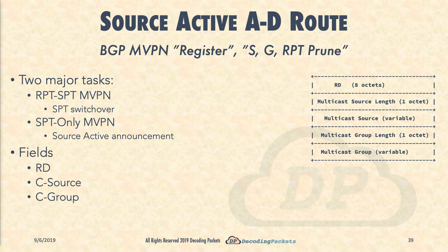I am referring to the two major philosophies on how to support ASM, or any source multicast, in the customer network via an SP MVPN. As a first option, we can have what are called RPT-SPT MVPNs — MVPNs that support both RPTs (rendezvous point trees) and SPTs (shortest path trees) in the SP core. Any ASM scenarios covered thus far in the series are examples of RPT-SPT MVPNs.